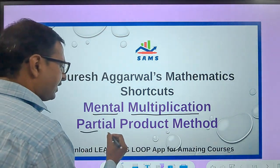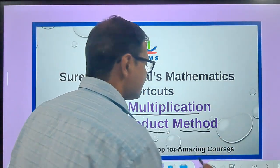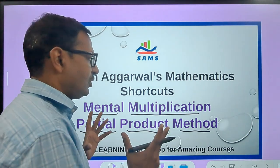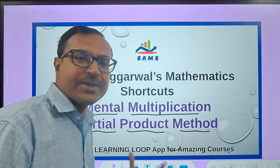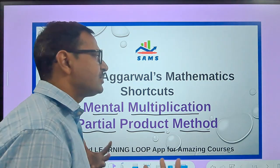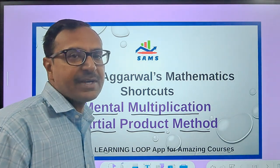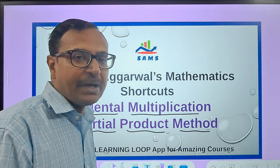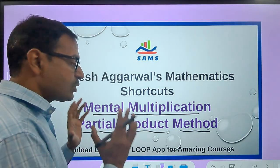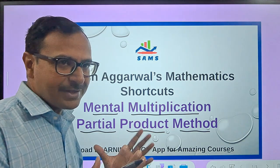This method is the partial product method, which is the most common method that students normally undertake. We have put up many methods on the channel to help you develop 10 times faster speed at multiplying numbers, but this is the most basic method and everybody should focus on this.